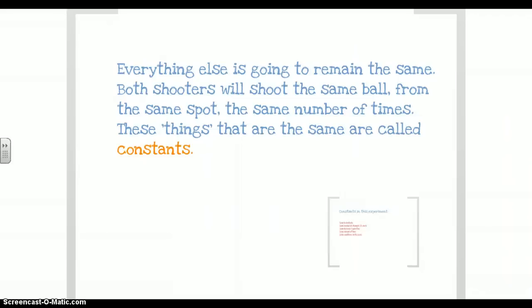When you set up the experiment, everything else remains the same. Both shooters shot the ball from the same spot, the same number of times. The things that remain the same in an experiment are called constants. Remember, in a controlled experiment, which is a good experiment, that's the only type where you can trust the results—only one thing is different. So you're usually going to have a lot of things that are the same.